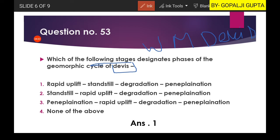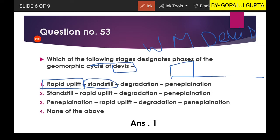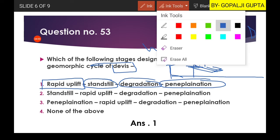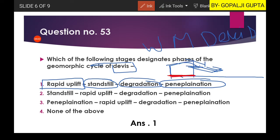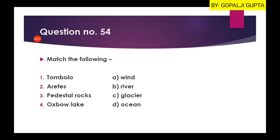According to Davis, the geomorphic cycle of erosion has stages like option one: first we have rapid uplift — suppose this is the plane area and we have rapid upliftment; then standstill — this uplifted area continues; then degradation — the area starts to erode; then finally peneplanation — by continuous degradation the area converts into a peneplain. So option one is our right answer.